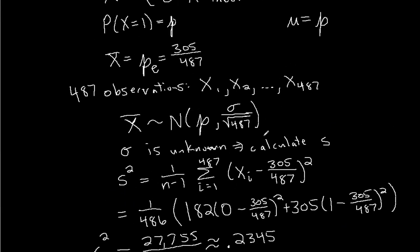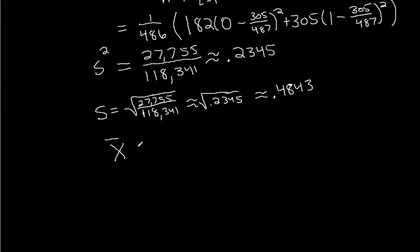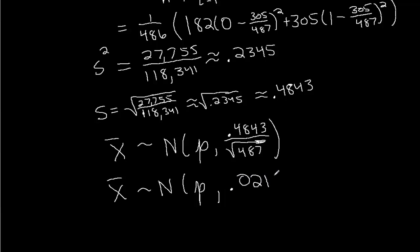So I'm just going to rewrite my distribution here. When I have this distribution, we're going to plug in that estimate for the standard deviation. And we have x bar is approximately normally distributed with mean p, that's what we're trying to estimate overall, and standard deviation about 0.4843 divided by the square root of 487. Written in a decimal we can work with, this is about normally distributed with mean p and standard deviation 0.0219.